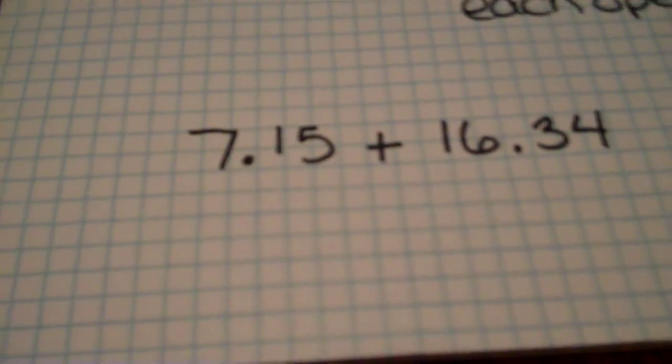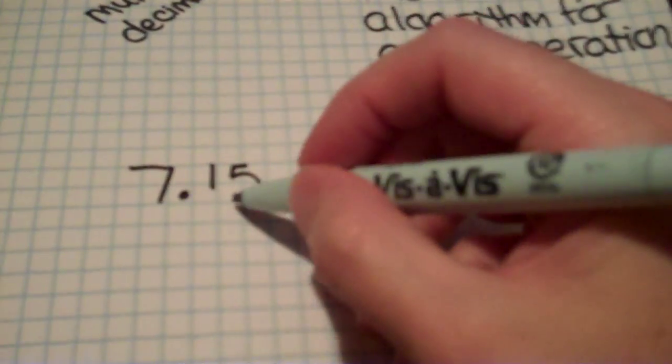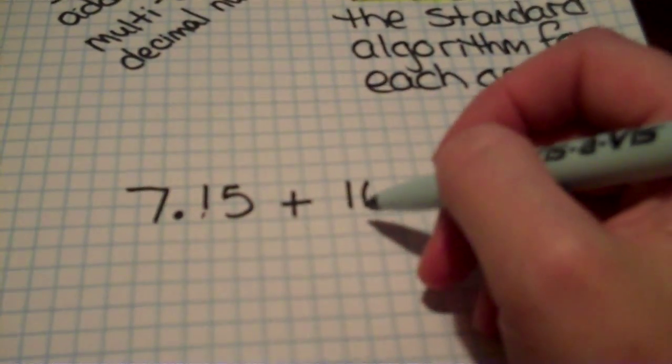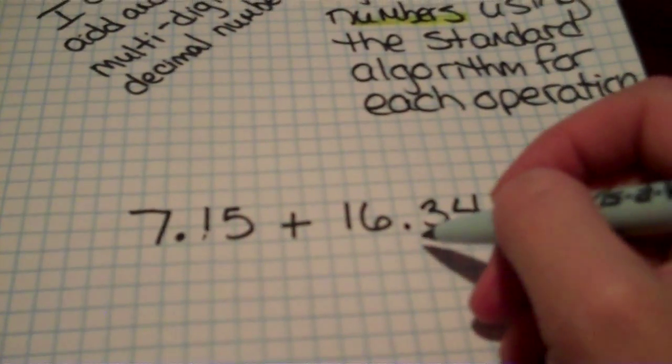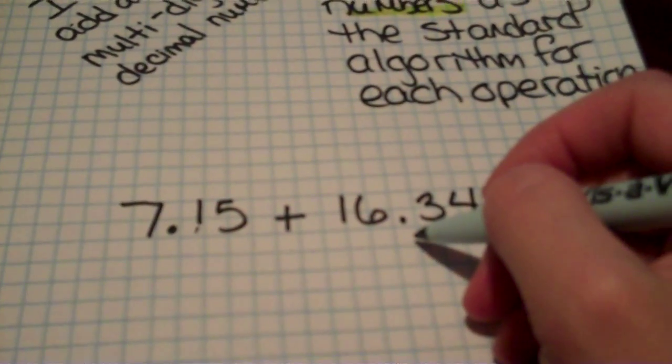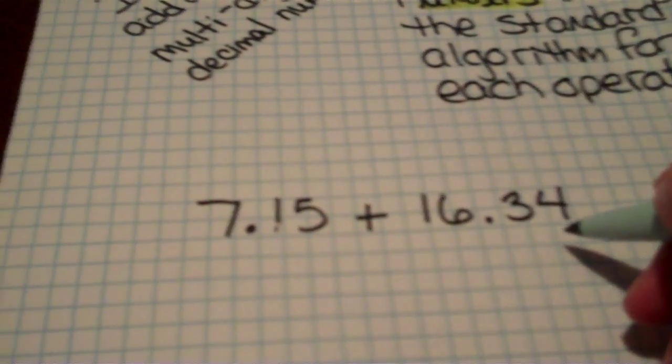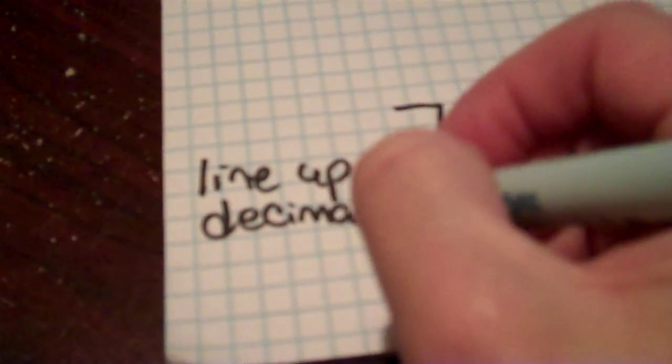Alright, so 7 and 15 hundredths, remember your decimal place value. The 7 is in the 1's place. The 1 is in the tenths place. The 5 is in the hundredths place. Plus the 1 is in the tens place. The 6 is in the 1's, the decimal point. We say and. 3 is tenths. 4 is in the hundredths. We can't really add it up this way, but it is very important that you line up the decimal points. So I'm going to write this for you. Line up the decimal points.